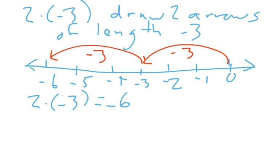Now what gets a little bit tricky — and we all struggle with this a little bit — is how to illustrate the multiplication when that first number is a negative number. That's a little bit tricky. So let's try to explore that with a couple of examples.